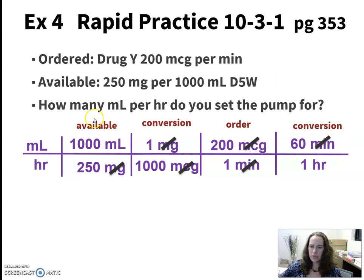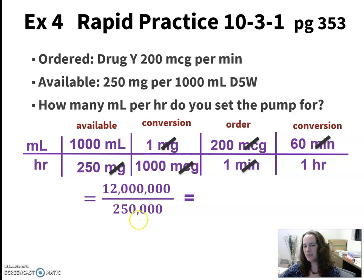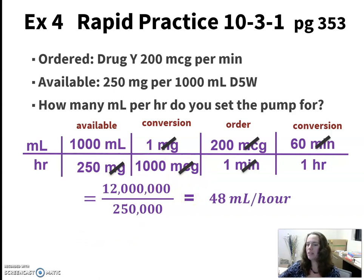We're ready to multiply everything on the top. 1000 times 200 times 60 is a big number. On the bottom, 250 times 1000, one and one — so we've got 250,000. I use the commas just to keep track of how many zeros we're looking at, because you are going to get some big numbers on these problems. When you do your 12 million divided by 250,000, you should wind up with 48 milliliters per hour as your answer.